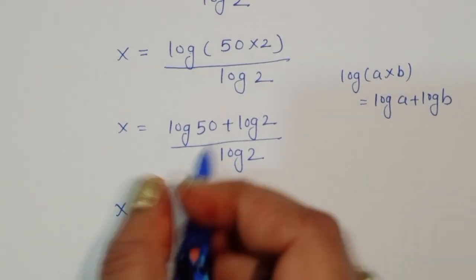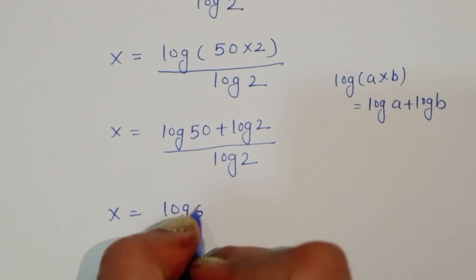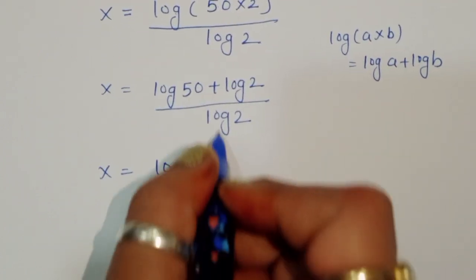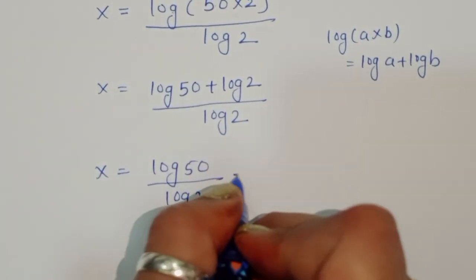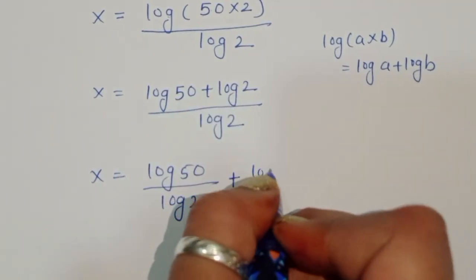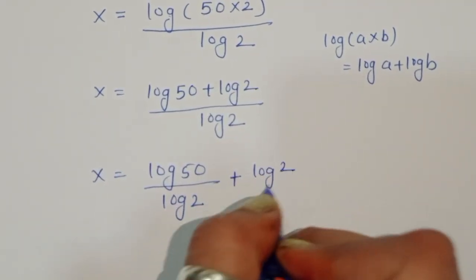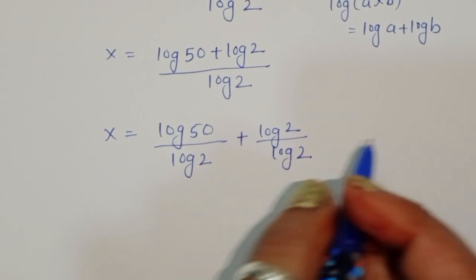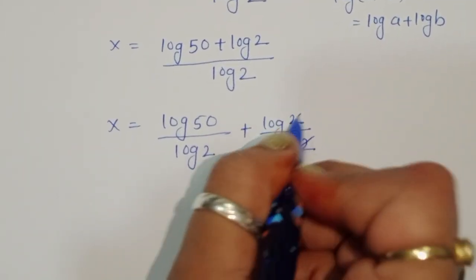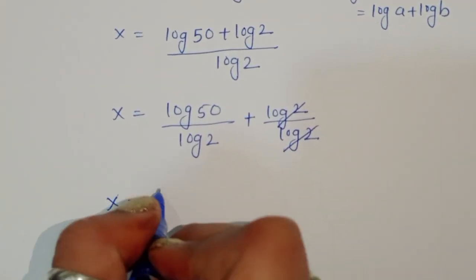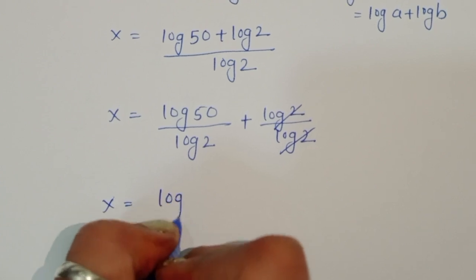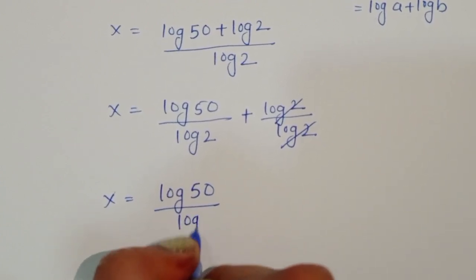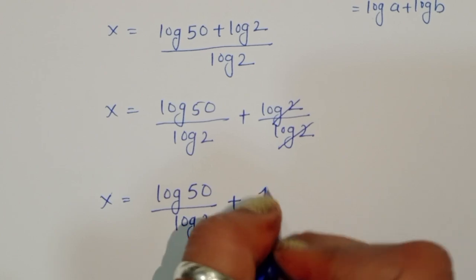We separate the terms: x equals log of 50 divided by log of 2, plus log of 2 divided by log of 2. Since log 2 divided by log 2 cancels to 1, we get x equal to log of 50 divided by log of 2, plus 1.